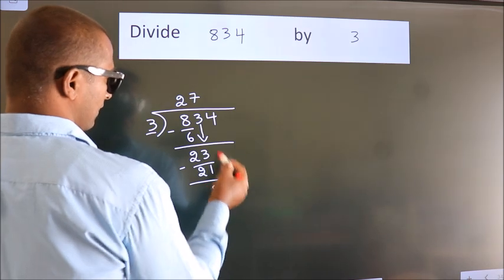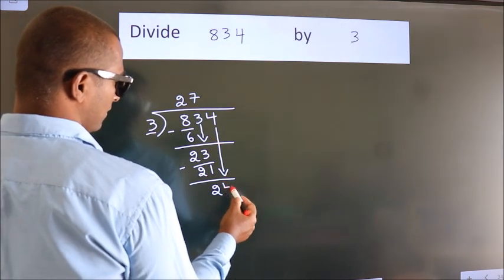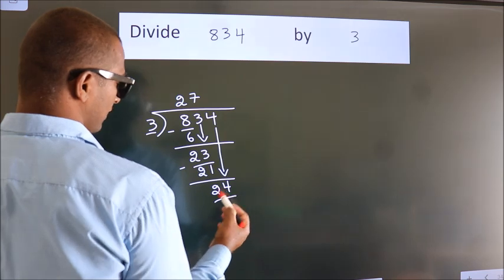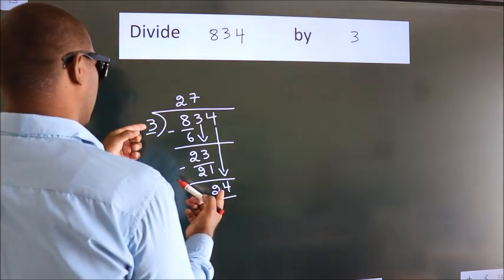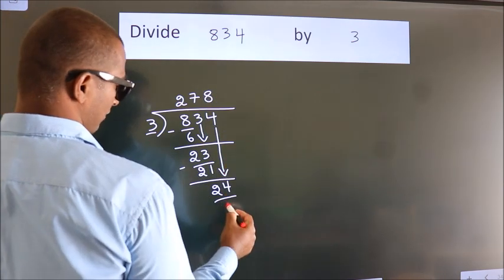After this, bring down the beside number. So 4 down. So 24. When do we get 24 in 3 table? 3 8s, 24.